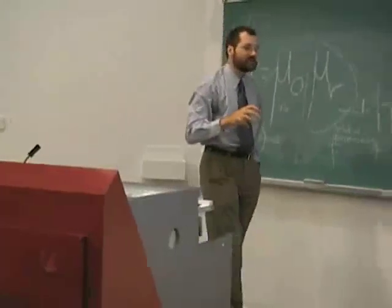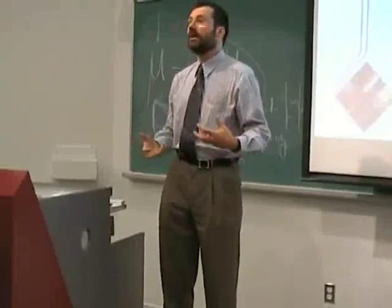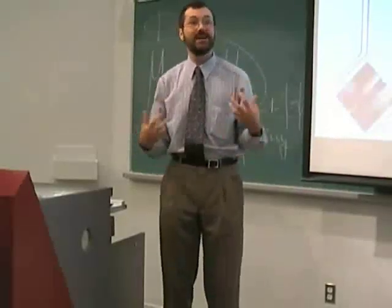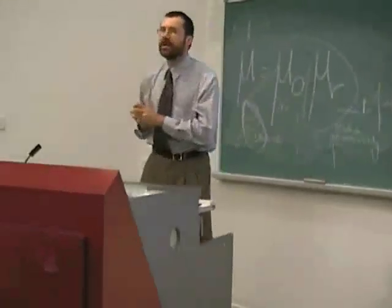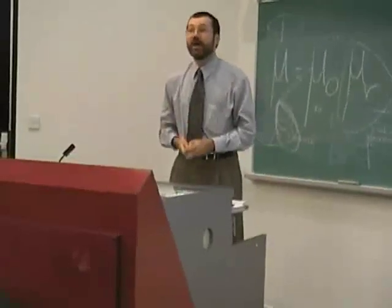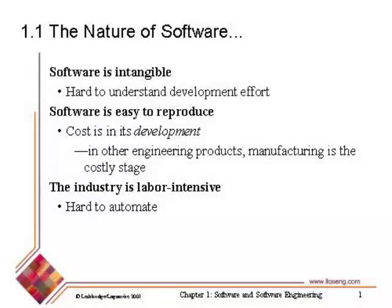The general public looks at a piece of software, sees a user interface, and thinks it's probably relatively simple. Even people in professional roles do not understand the difficulties of developing software, and that puts a lot of pressure on our industry. Why do things go wrong? Why do we have bugs? They just don't realize the difficulty of getting high-quality software out. Software is also easy to reproduce — you can stamp off thousands of copies in seconds, versus hours for hardware on an assembly line.